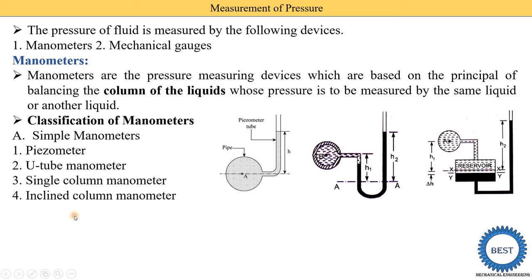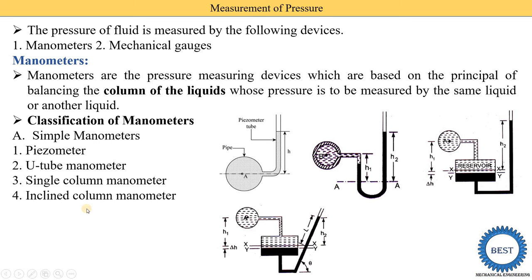The fourth type of simple manometer is the inclined column manometer, where the tube is inclined — that is why it is called the inclined column manometer. These are the four types of simple manometer.